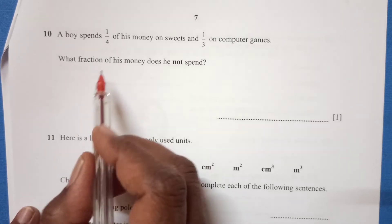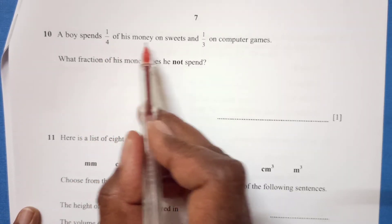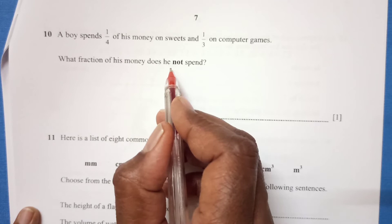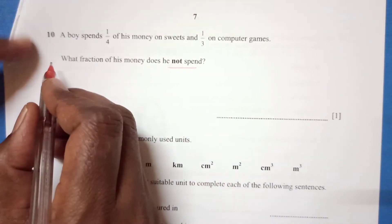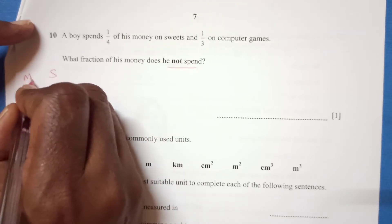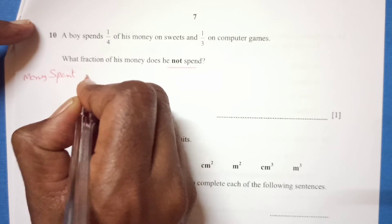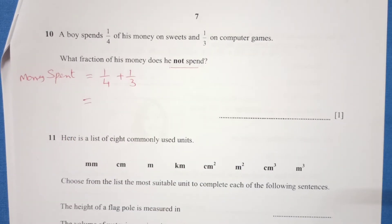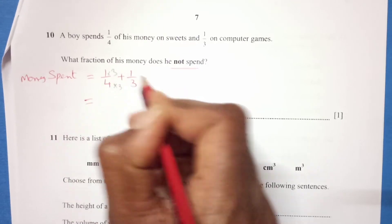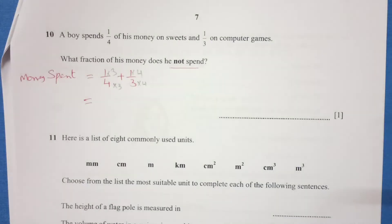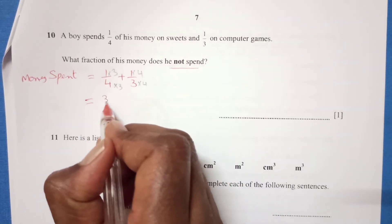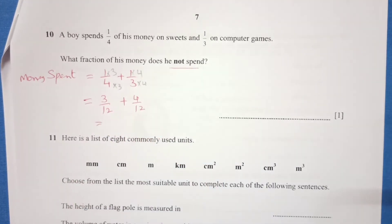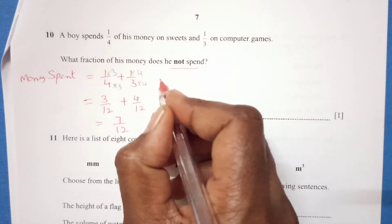Question 10: A boy spends 1/4 of his money on sweets and 1/3 on computer games. What fraction of his money does he not spend? Let's see first how much he spends altogether. Money spent is 1/4 plus 1/3. To make the denominator the same, multiply by 3 and by 4. So 3/12 plus 4/12.